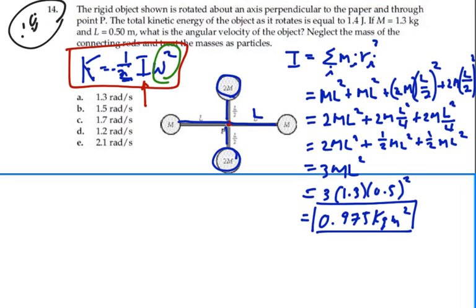Well, we wanted to say that the kinetic energy is one-half the moment of inertia times angular velocity squared. So if we multiply both sides by 2 divided by the moment of inertia and take the square root, the angular velocity should equal the square root of 2 times the kinetic energy divided by the moment of inertia.